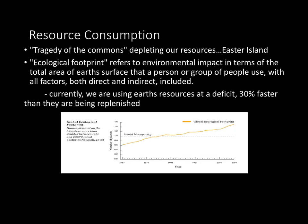Another important topic is an ecological footprint. This basically refers to environmental impact in terms of the total area of Earth's surface that a person or group of people use, with all factors — both direct and indirect — included. If you refer to the graphic, currently we are using the Earth's resources at a deficit of 30% faster than they are being replenished.